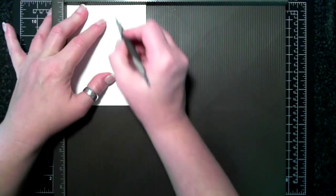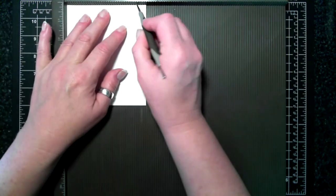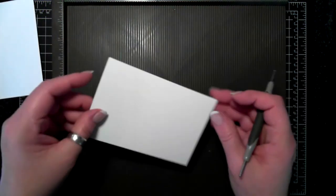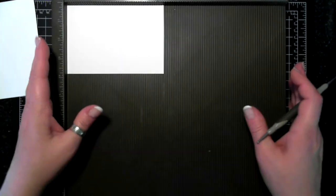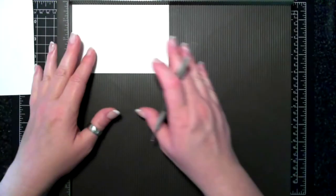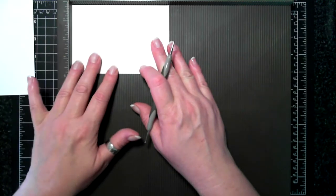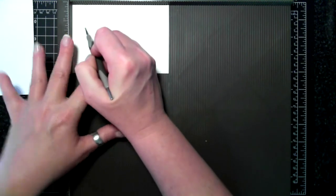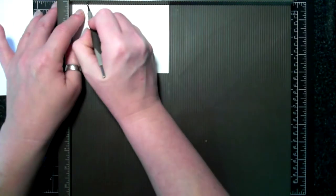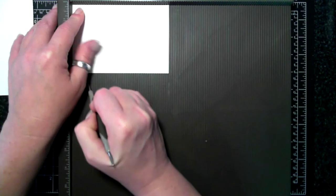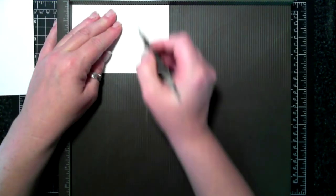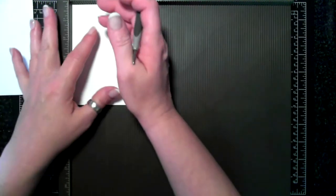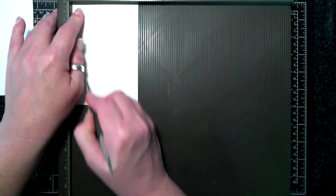One, four and a half, and five. Flip it around and we'll score at a half, two, two and a half, and four.